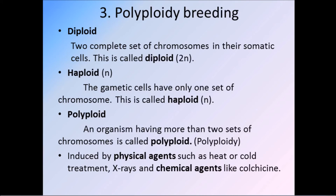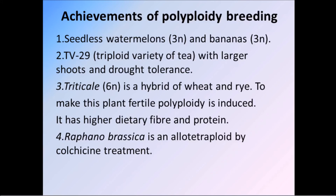Polyploidy is induced by physical agents such as heat or cold treatment, X-rays, and chemical agents like colchicine. Achievements of polyploid breeding: seedless watermelons (3N) and bananas (3N) were developed by polyploidy breeding. TV-29 is a triploid variety of tea with larger shoots and drought tolerance — it was developed through plant breeding. Triticale (6N) is a hybrid of wheat and rye; to make this plant fertile, polyploidy is induced, giving it higher dietary fiber and protein.